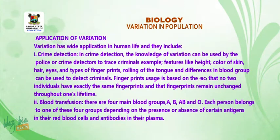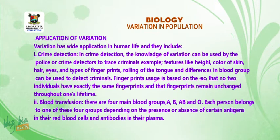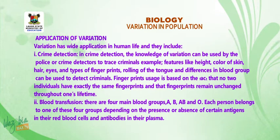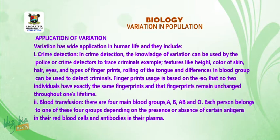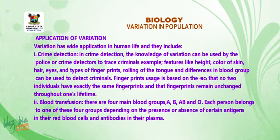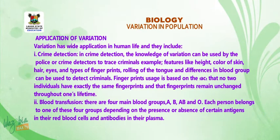Application of variation. Variation has wide application in human life. 1. Crime detection — the knowledge of variation can be used by the police or crime detectors to trace criminals. For example, features like height, color of skin, hair, eyes, types of fingerprints, rolling of the tongue, and differences in blood group can be used to detect criminals. Fingerprint usage is based on the fact that no two individuals have exactly the same fingerprints and that fingerprints remain unchanged throughout one's lifetime.